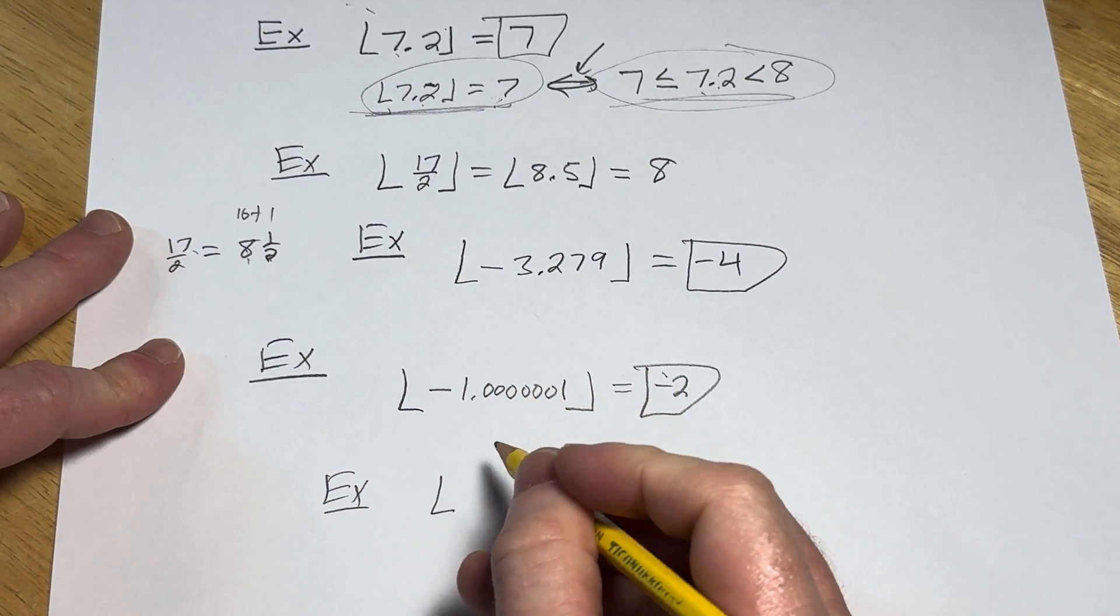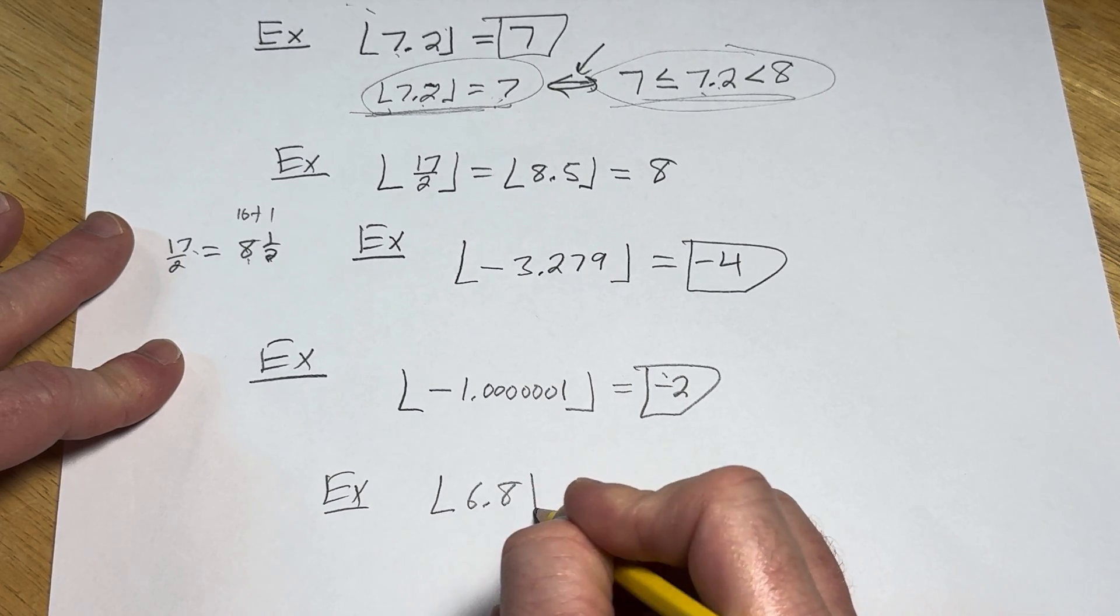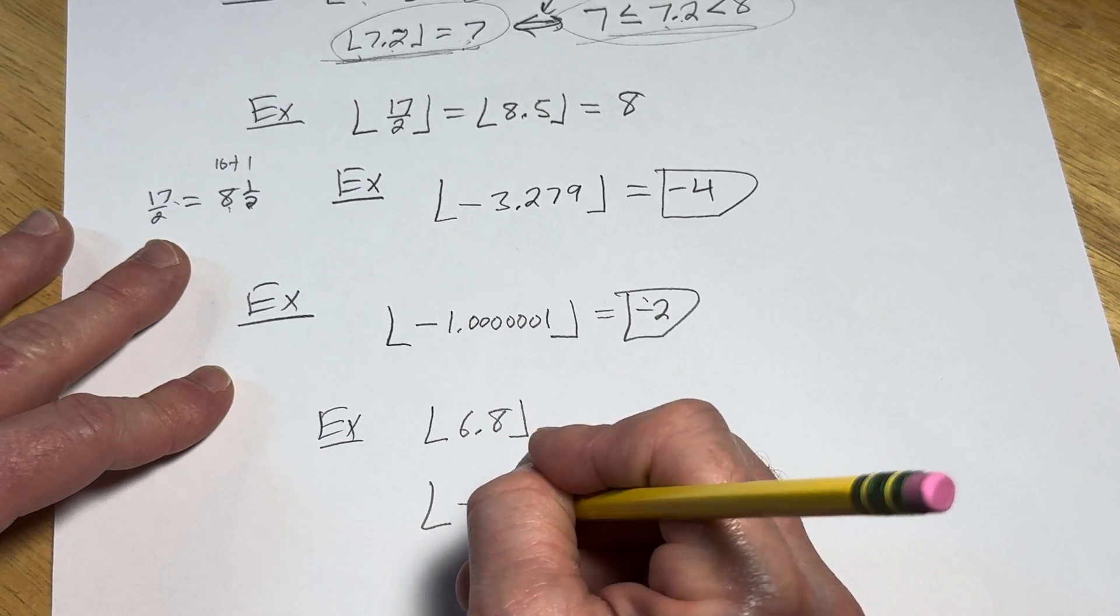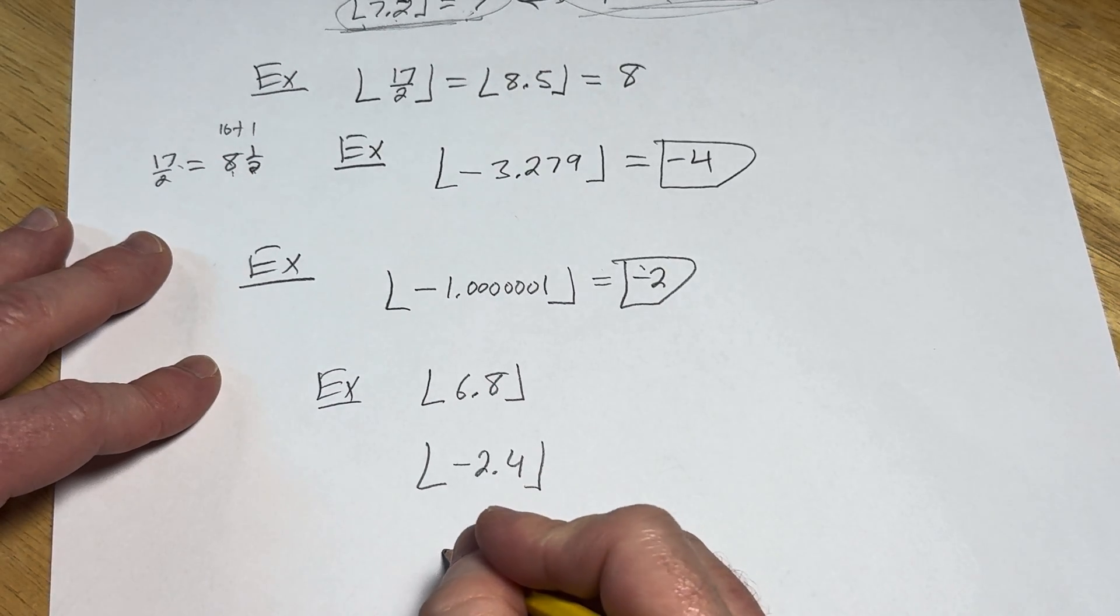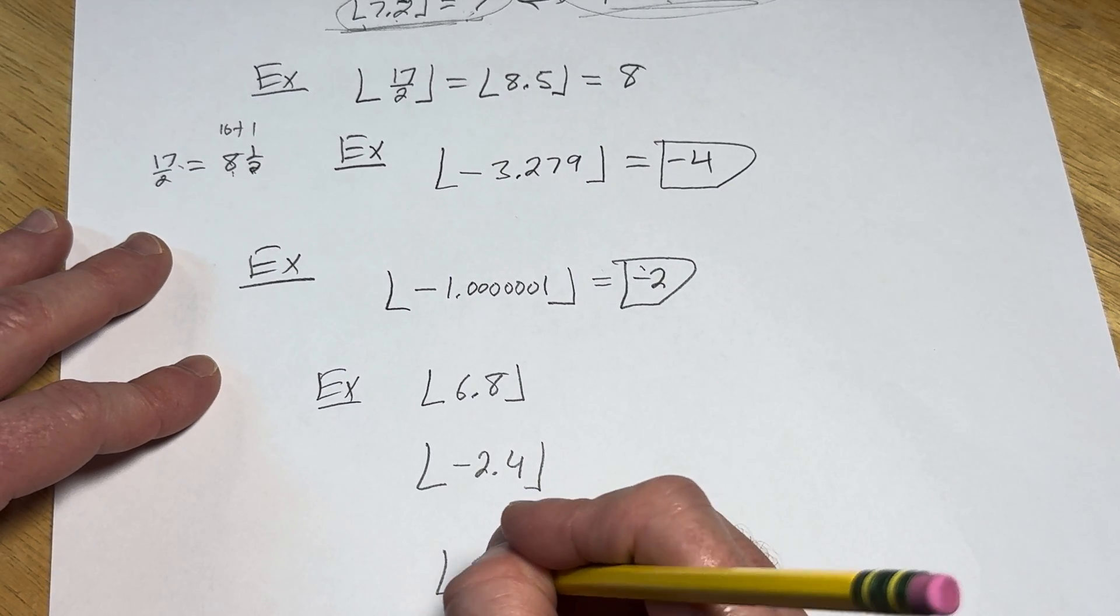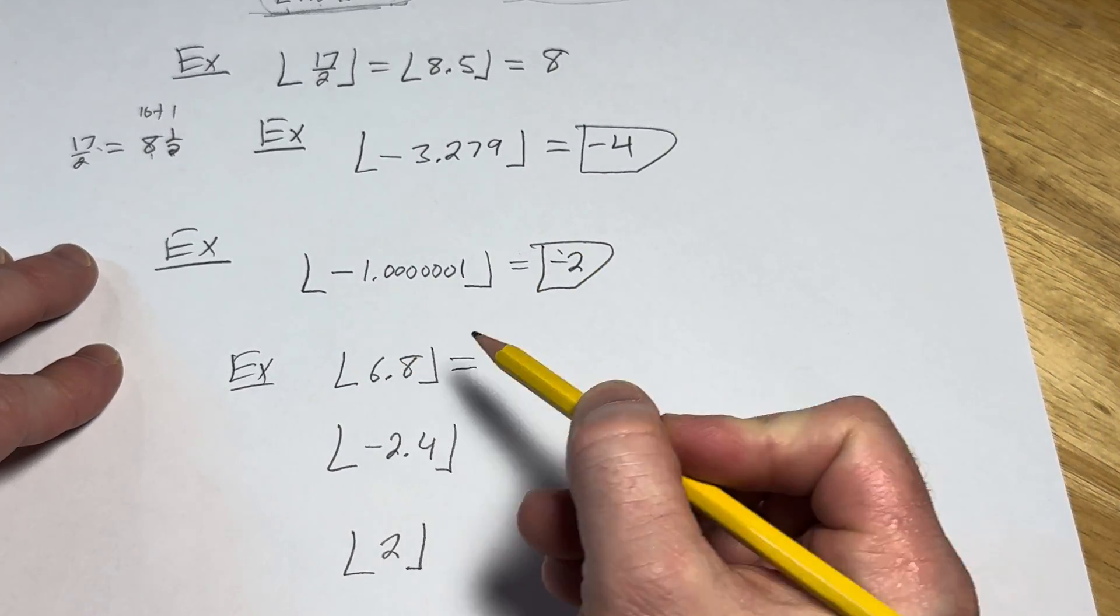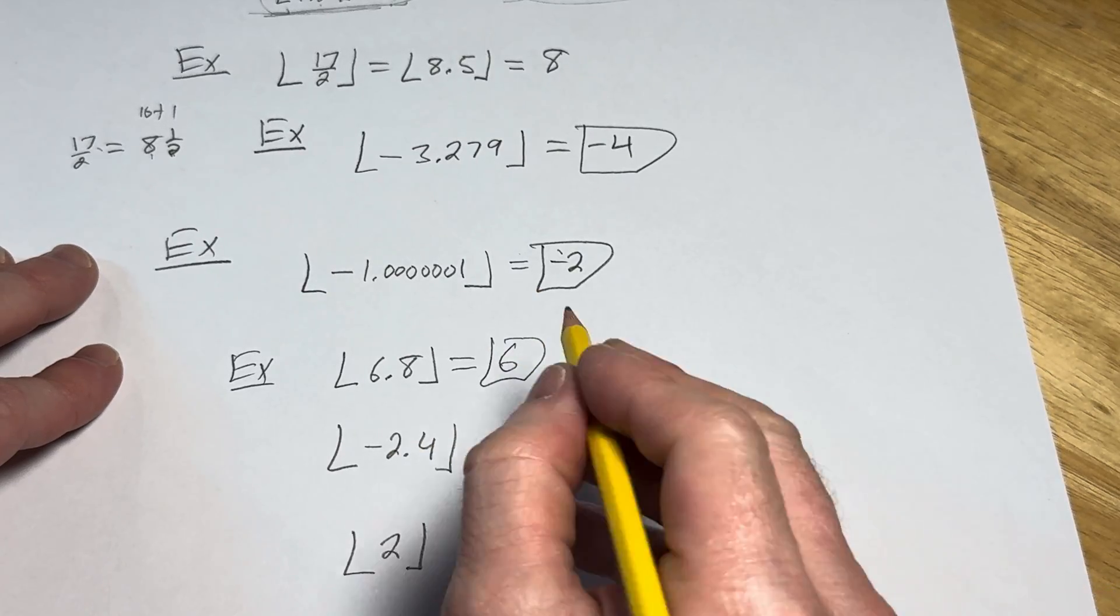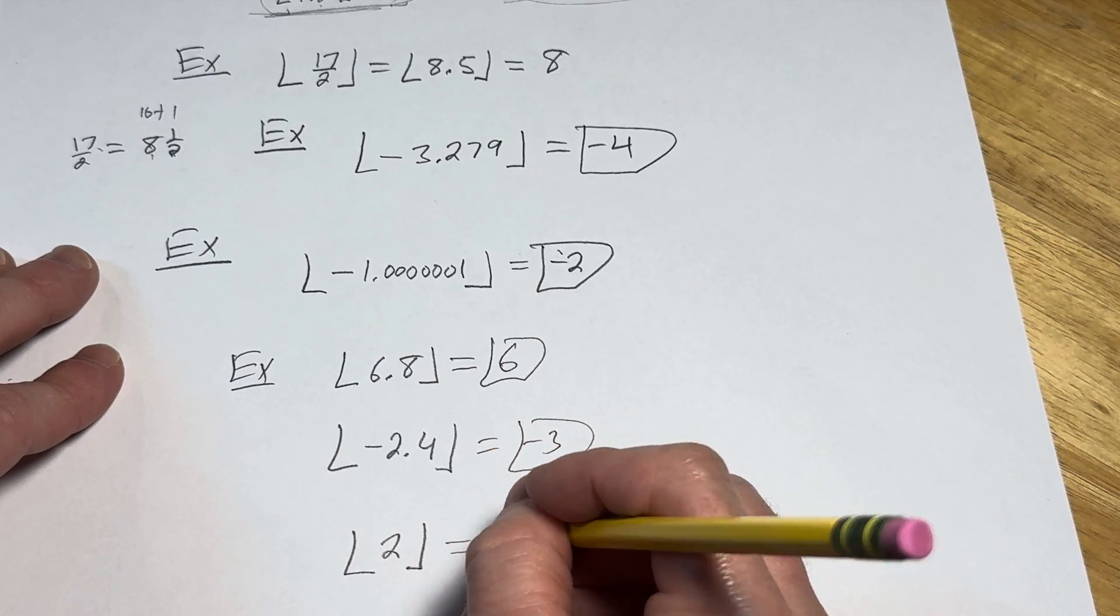Let's do the floor of 6.8 and the floor of -2.4, and last but not least, let's do the floor of 2. So working these three examples out, the floor of 6.8, you bring it down, it's going to be 6. Floor of -2.4, bring it down, it's going to be -3. Floor of 2 is just 2. And that's it.